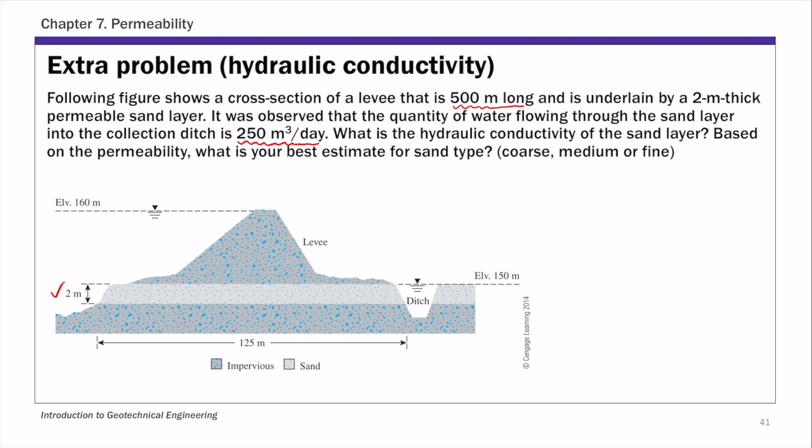To estimate hydraulic conductivity, we're going to use Darcy's Law, which is q equals kia. From Darcy's Law, we can calculate the hydraulic conductivity k as simply q over ia. The key to solve this example is to find what A is and what the hydraulic gradient i is.